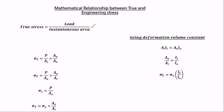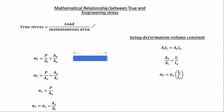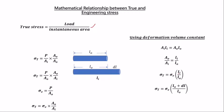The instantaneous length is the length at that instant. Taking a specimen with an original length L₀, after deformation there is a change in length ΔL, so the instantaneous length L_i = L₀ + ΔL. Therefore L_i/L₀ = (L₀ + ΔL)/L₀ = 1 + ΔL/L₀. Since ΔL/L₀ is the engineering strain, we get that the true stress equals the engineering stress times (1 + engineering strain): σ_true = σ_e(1 + e).